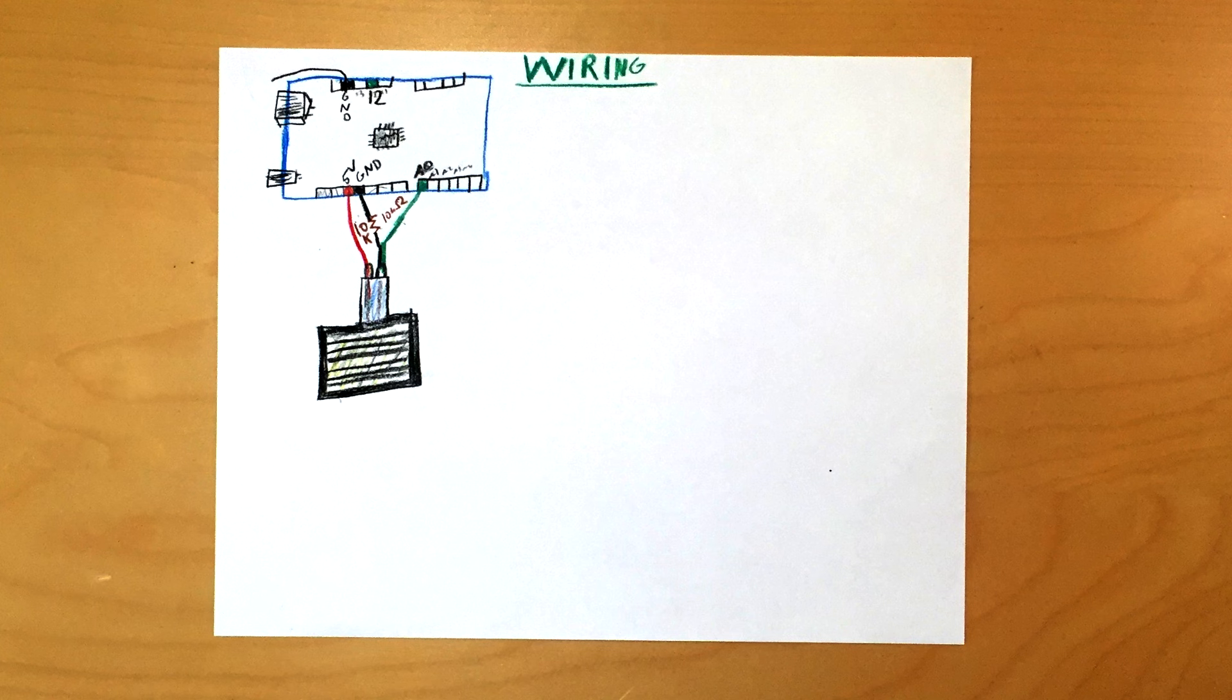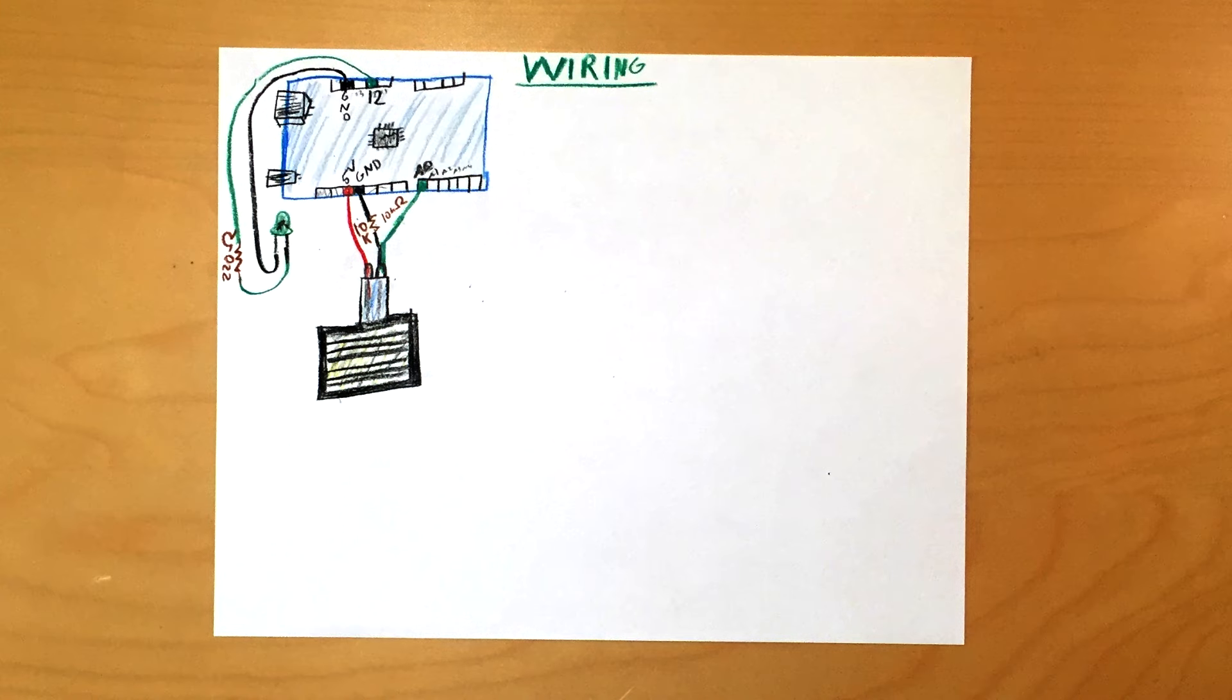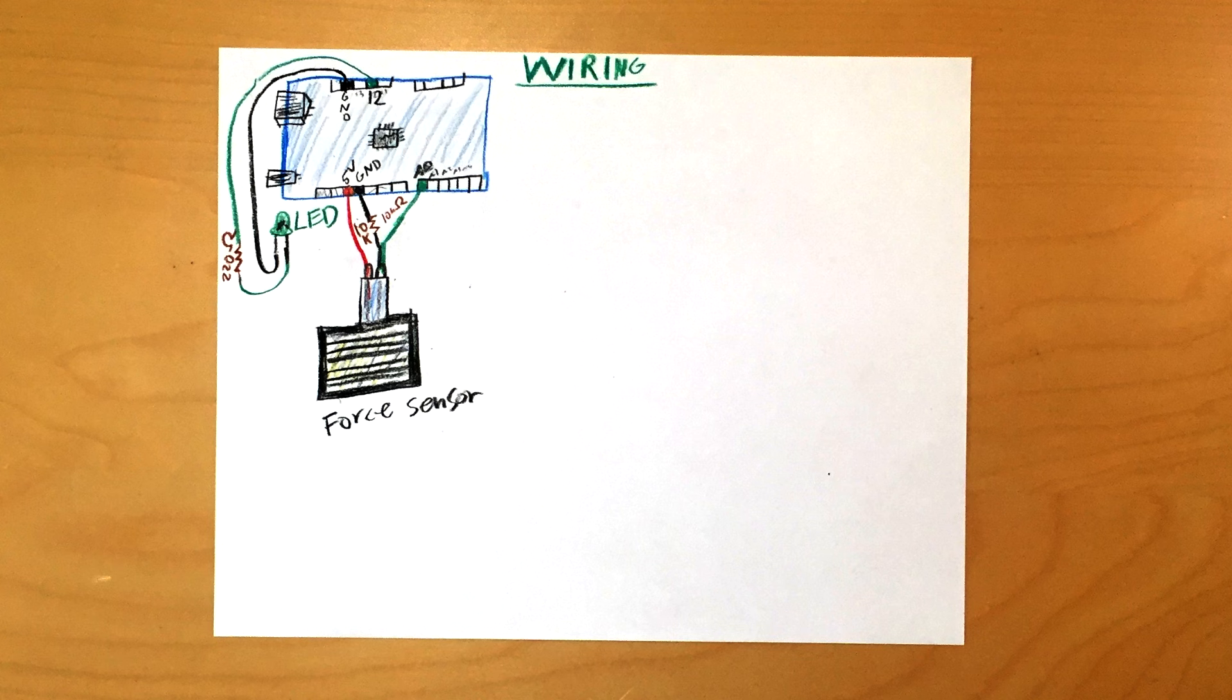Next, let's wire up the LED. Connect the positive longer leg of the LED to a resistor around 220 ohms. Connect the other end of the resistor to a wire leading to a digital pin, such as 12. Finally, connect the shorter negative pin to ground.